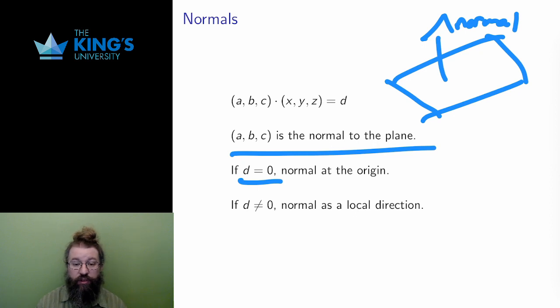The amazing thing about this construction is that a, b, c is still perpendicular to a plane even if d is not equal to 0, as long as I treat it as a local direction.